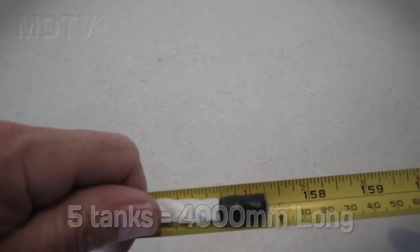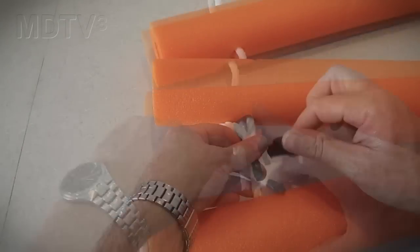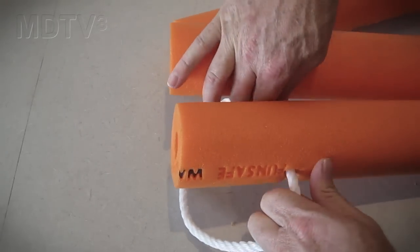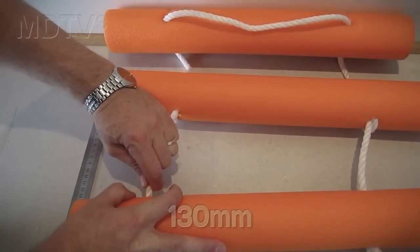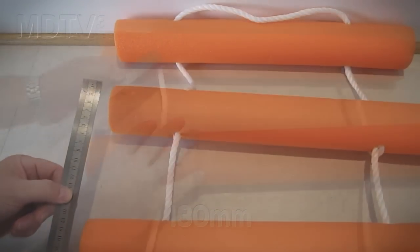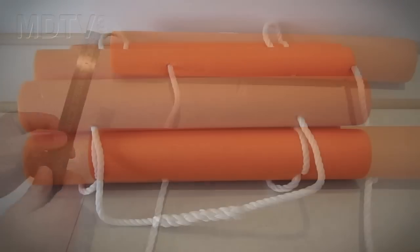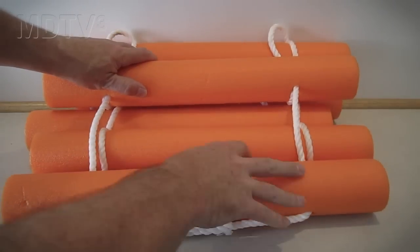Next we look at making a five scuba tank rack. Measure out and cut a length of rope four meters long. Loop the rope around and through each pool noodle section except for the first and last sections. Set all the pool noodle sections 130 millimeters apart except for the first and last sections which are 120 millimeters apart. You can alter this design to hold as many scuba tanks as you like.